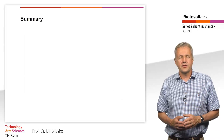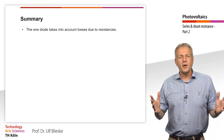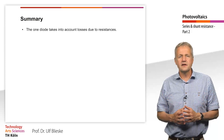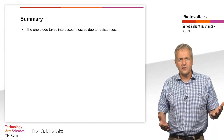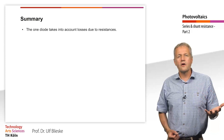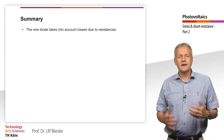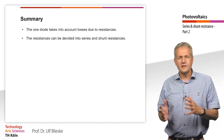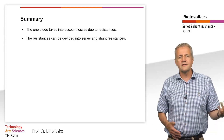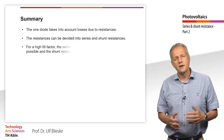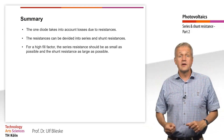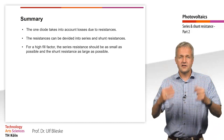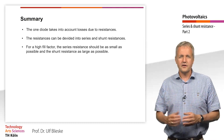Let us summarize this chapter. You have learned about the one diode model. In addition to the similarity of the behavior of a solar cell to a diode, this equivalent circuit model takes into account losses due to resistances. We have seen that these resistances can be divided into series and shunt resistances. For a high fill factor, the series resistance should be as small as possible and the shunt resistance as large as possible. Thank you for your attention.